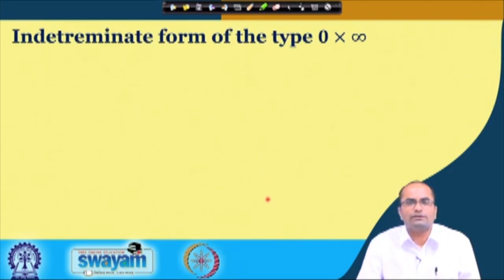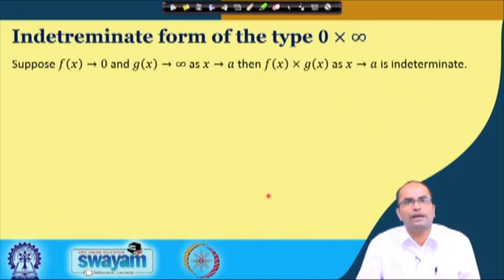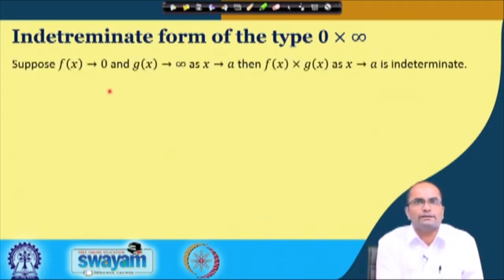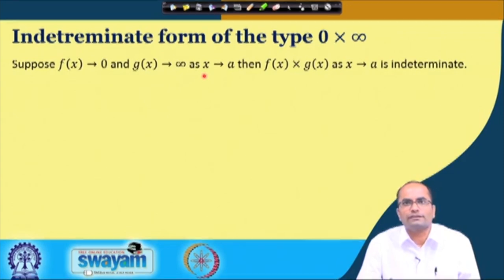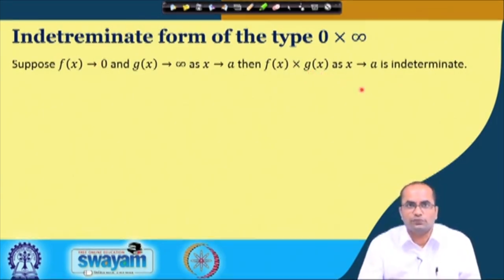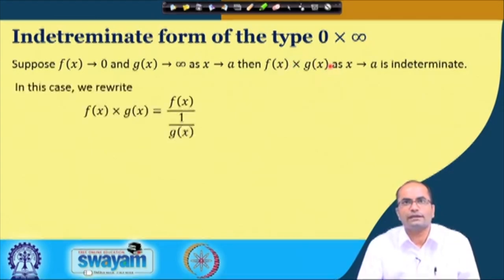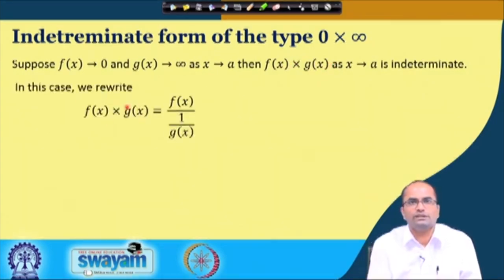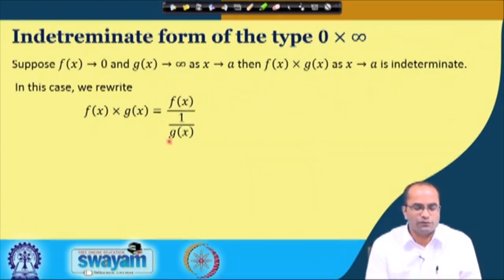Today we continue with the indeterminate form of type 0 times infinity. Suppose f(x) goes to 0 and g(x) goes to infinity as x goes to a. Then the product f(x)·g(x) is indeterminate. We can rewrite f(x)·g(x) as f(x) divided by 1/g(x), giving a 0/0 form.